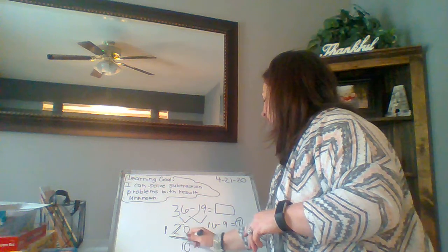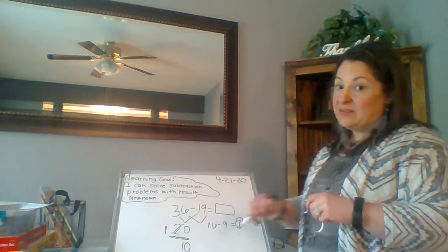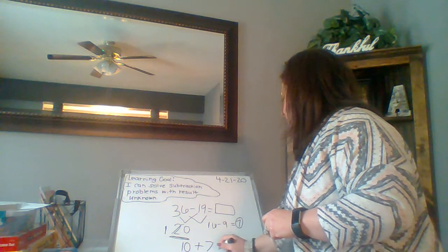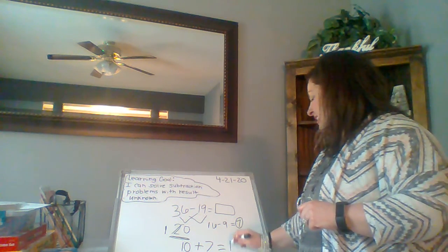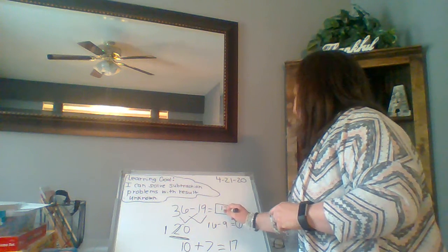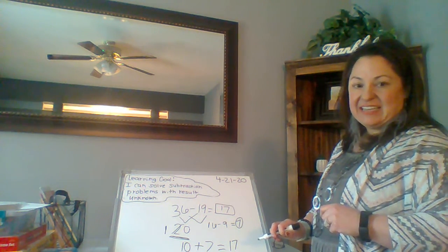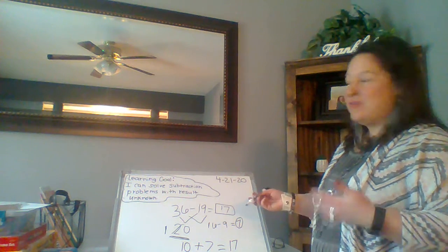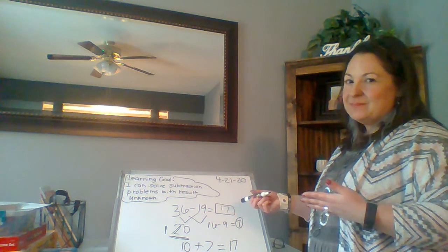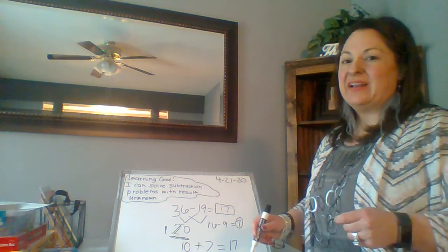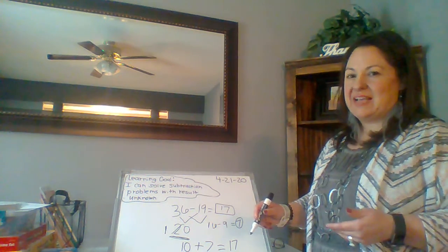So I have a 10 because I broke one of those apart. And I have 7 1s. So what is 10 plus 7? It's 17. So 36 minus 19 is 17. Do you see how to do that if you didn't have enough 1s? You can still break your 10 apart. It just looks a little bit different than when we actually draw out 10s and 1s.